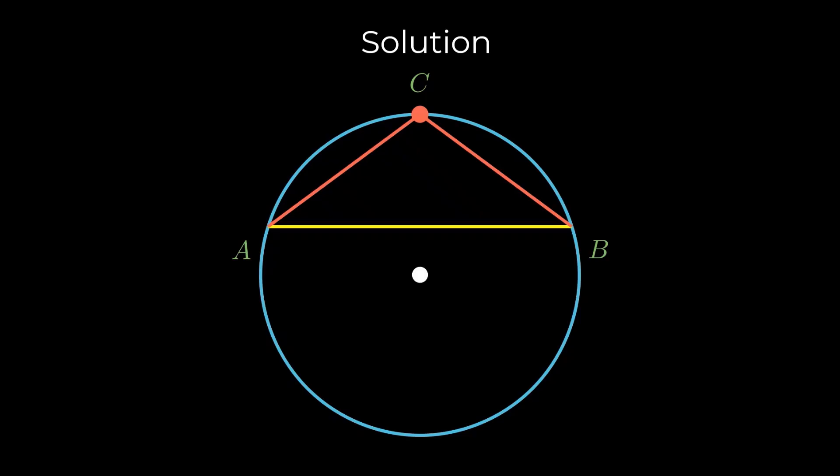For example, in this case, with respect to side AB, the point C and the center lie on opposite sides and hence angle ACB is obtuse.